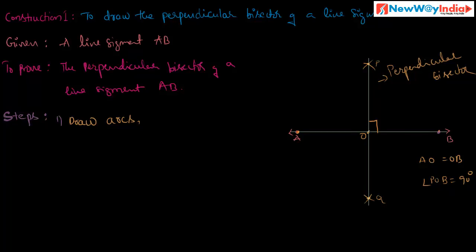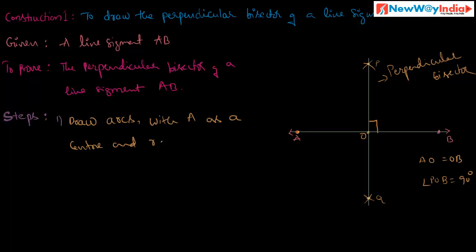So this is the construction of the perpendicular bisector of a line segment. Let us recap the steps. Step one: with A as center and radius more than half of AB, draw arcs above and below the line segment AB.